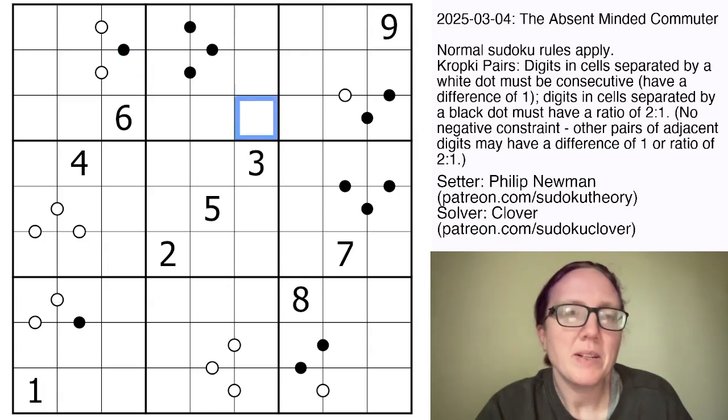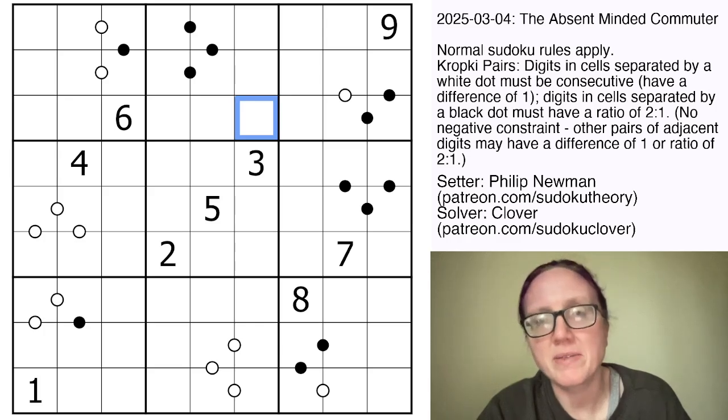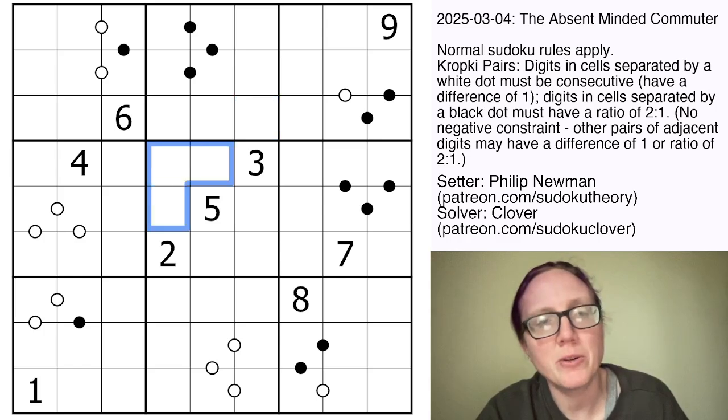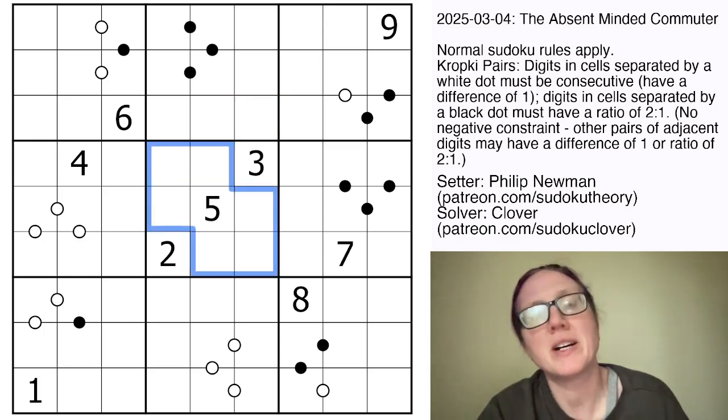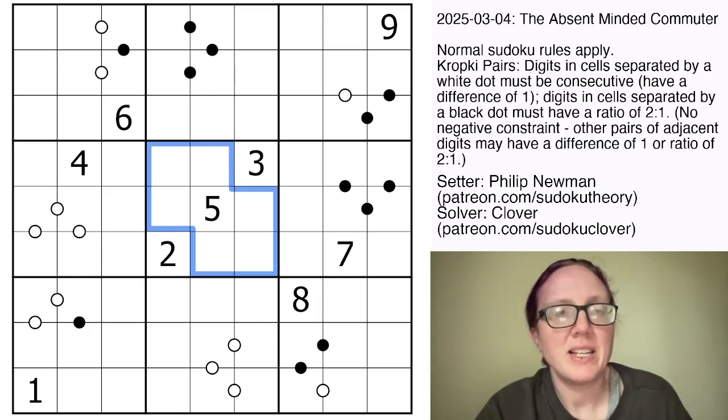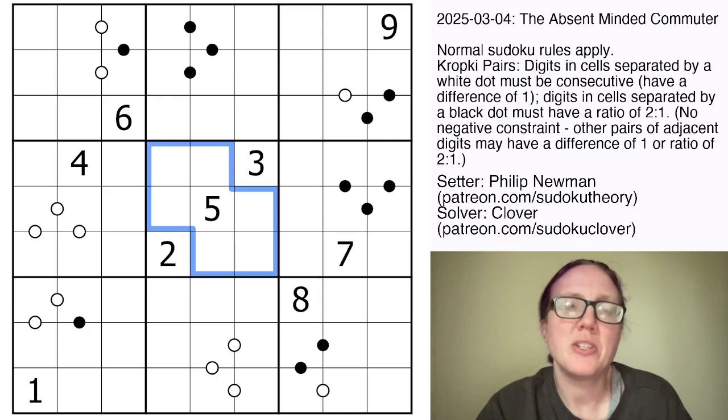Because it's Kropke Pairs and not just traditional Kropke, not all of the possible dots in the grid have necessarily been given, so there might be other pairs of digits that are adjacent that are in a 1 to 2 ratio, or that are consecutive that don't have a dot. So you need to focus on if you have a dot, then you do know something about those digits, but if you don't have a dot, that doesn't necessarily tell you anything.